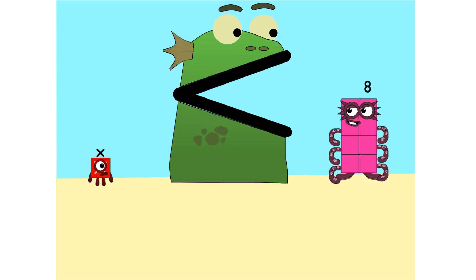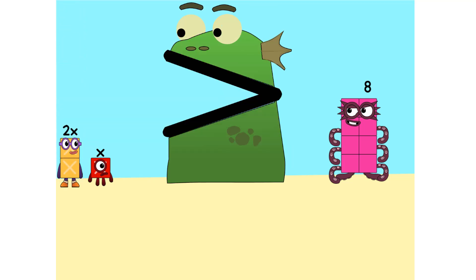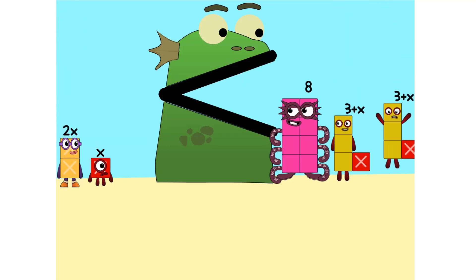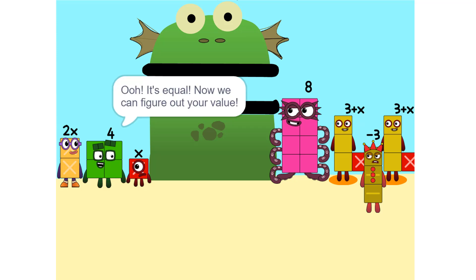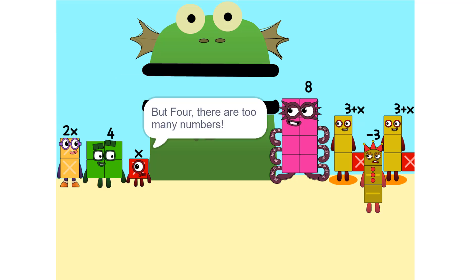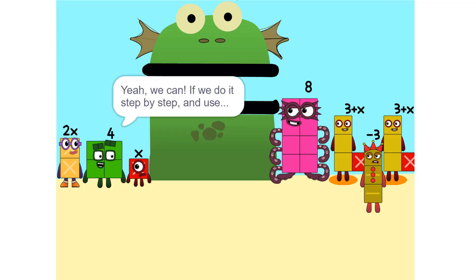2 times X equals 2X. Nope. It's equal. Now we can figure out your value. But there are too many numbers. We'll never figure it out. Yeah, we can. If we do it step by step and use our arm skills. So let's get started.